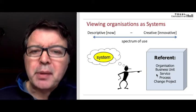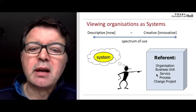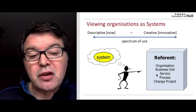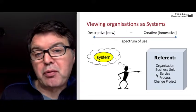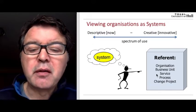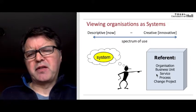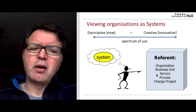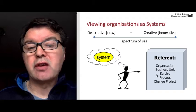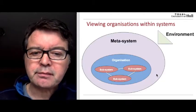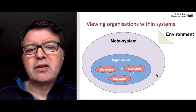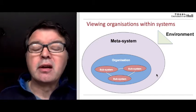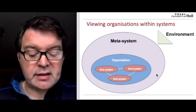In applied systems thinking we tend to use the concept as a way of conceptualizing reference objects like organizations, business units, services, processes, and even change projects. We might view those references descriptively — asking what type of system is this — or we might think of it creatively, asking how could this organization or business unit be in the future, more of a design thinking mode. We also tend to view organizations as being part of wider systems like society or a corporation, and we always think of systems as existing in an environment.